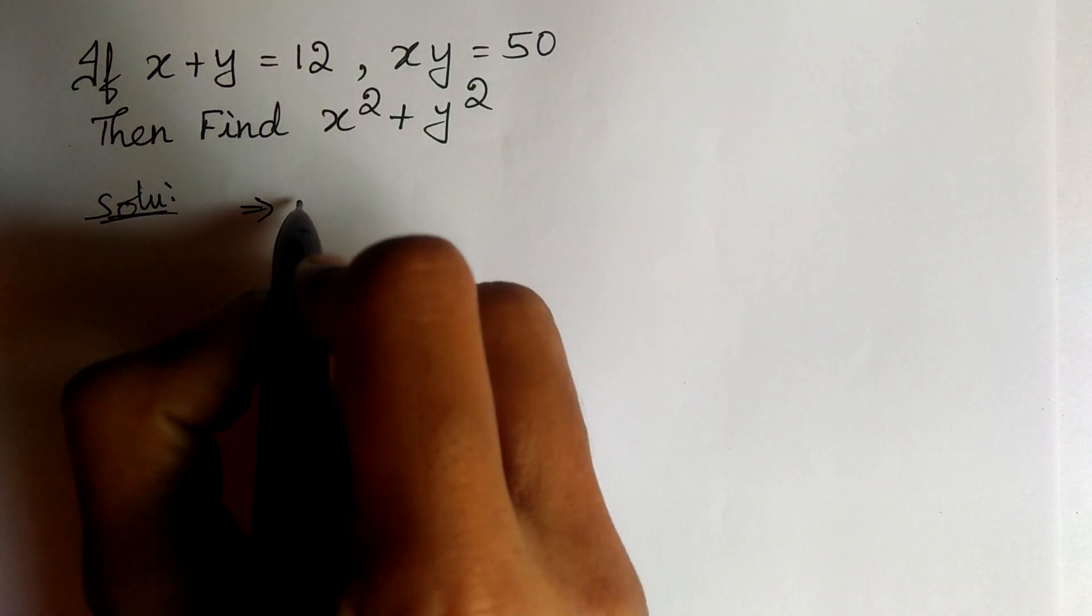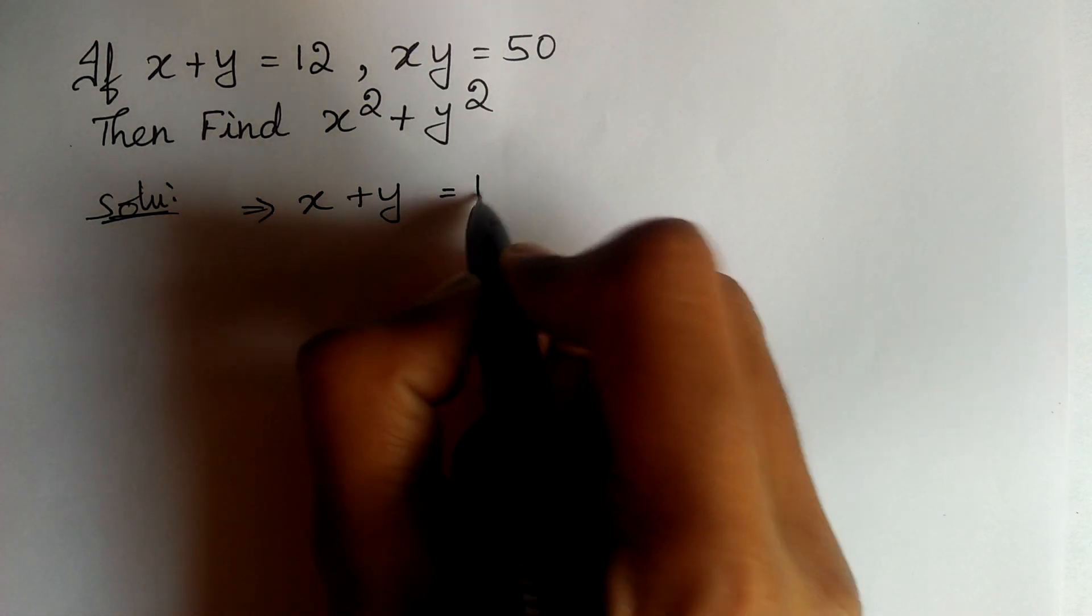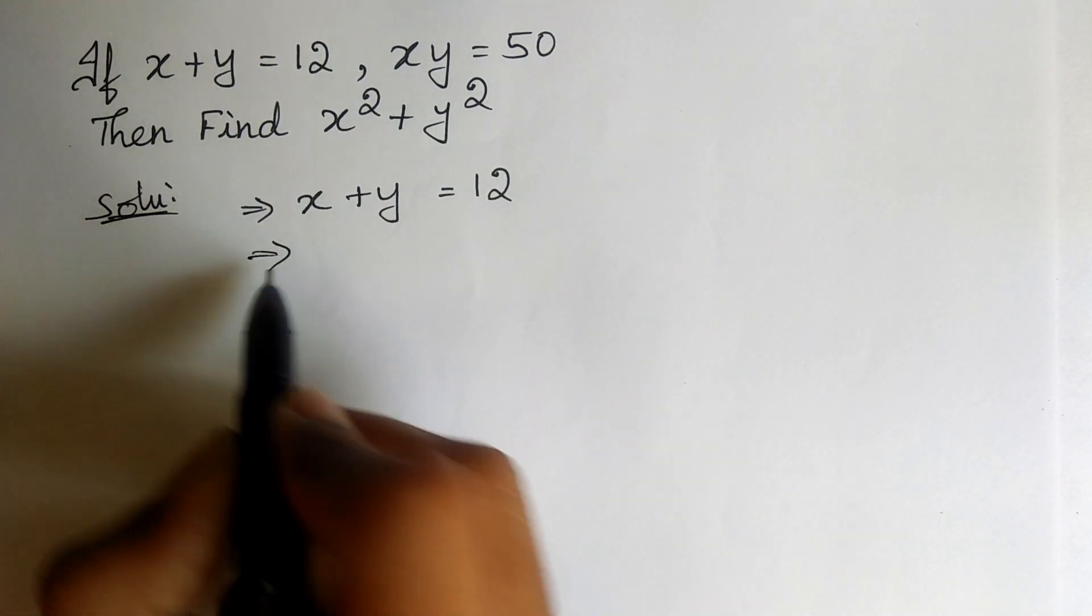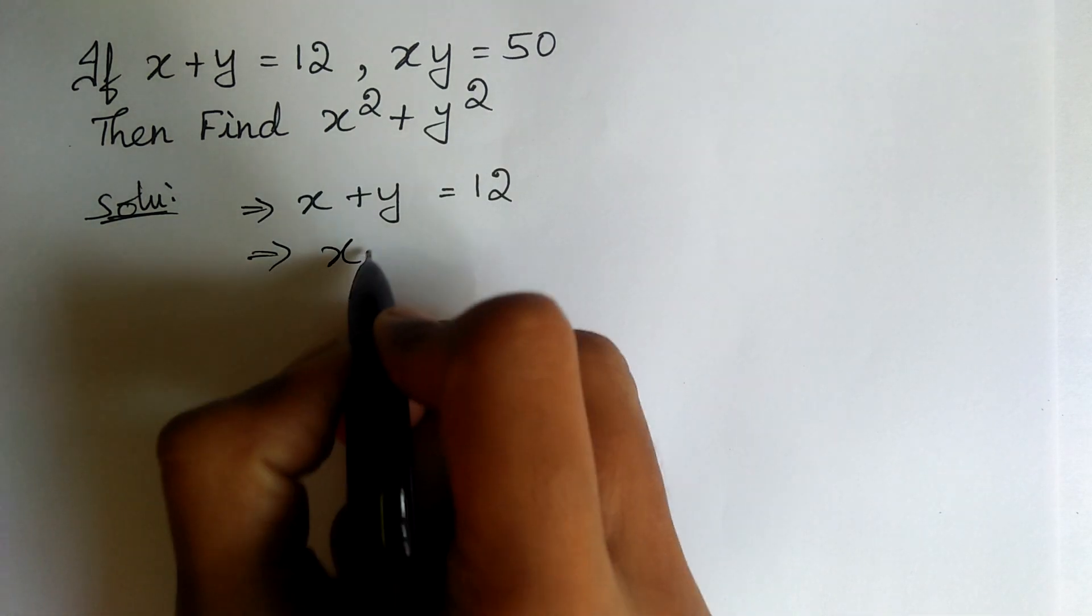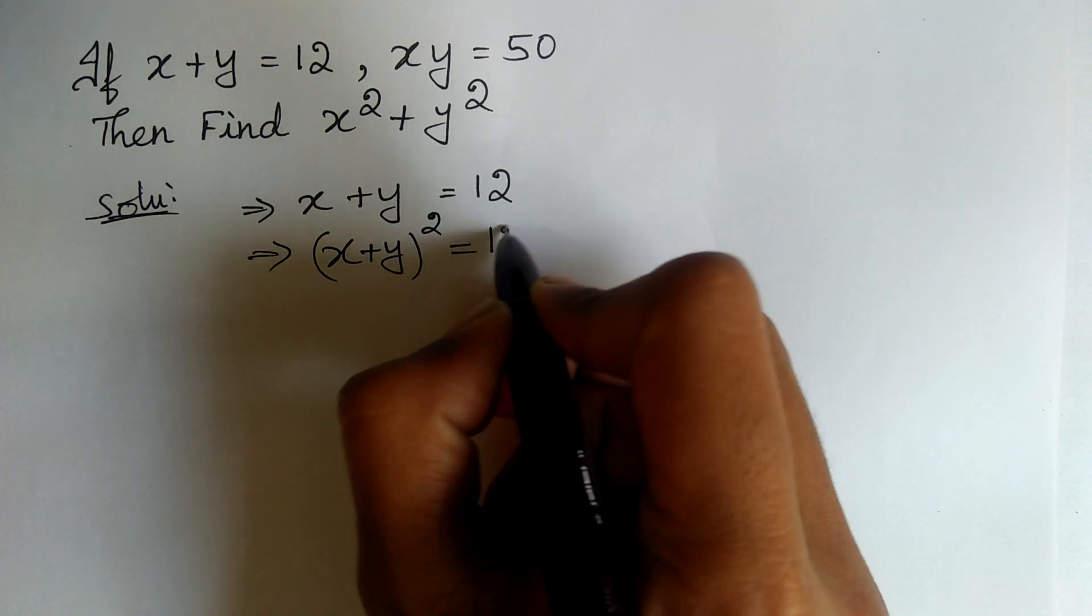First of all, let us take the equation x plus y is equal to 12. Let us take squares on both sides. x plus y the whole square is equal to 12 square.